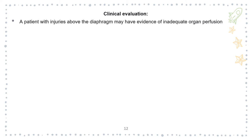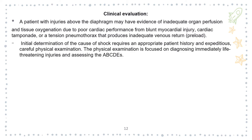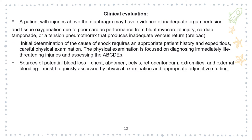Clinical evaluation. A patient with injuries above the diaphragm may have evidence of inadequate organ perfusion due to blunt myocardial injury, cardiac tamponade or tension pneumothorax that produces inadequate venous return. All patients must be evaluated through the ABCDE assessment. Sources of potential blood loss to check include the chest, abdomen, pelvis, retroperitoneum, extremities and external bleeding.